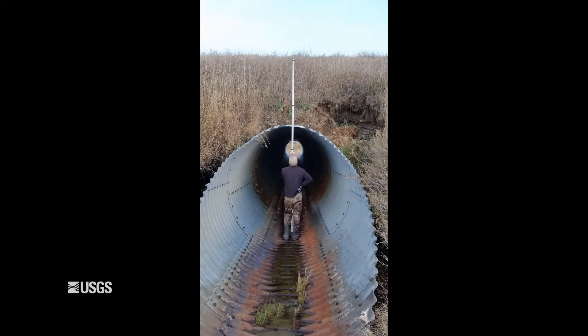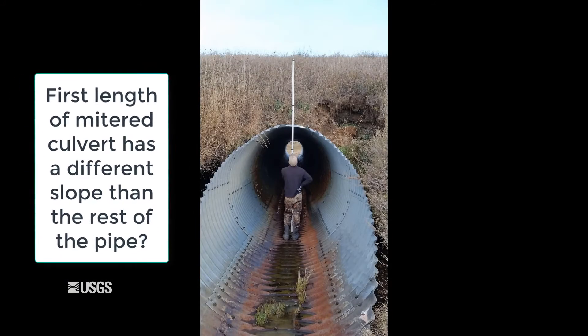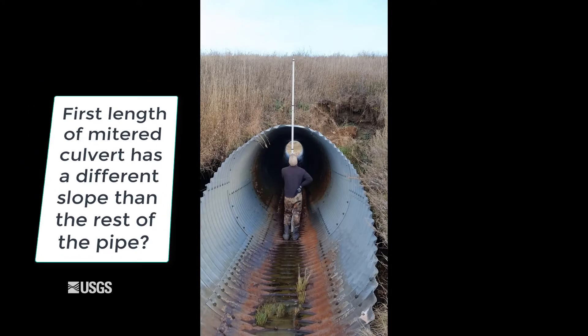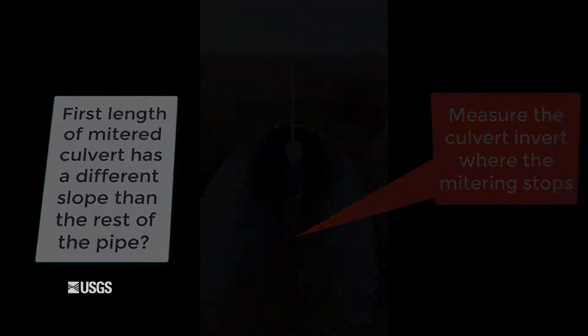Finally, sometimes the first length of a mitered culvert is at a different slope than the rest of the pipe. If so, measure the culvert invert at full pipe, or when the mitering of the pipe stops.